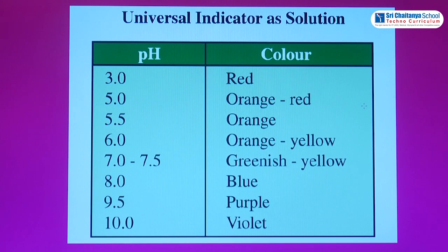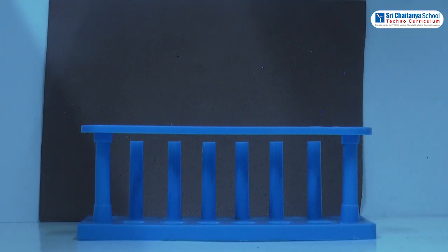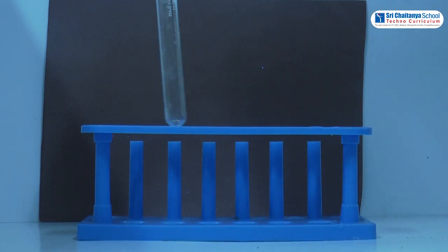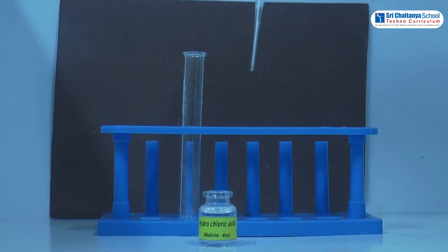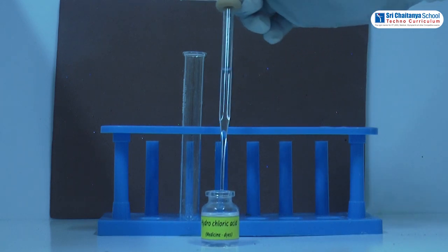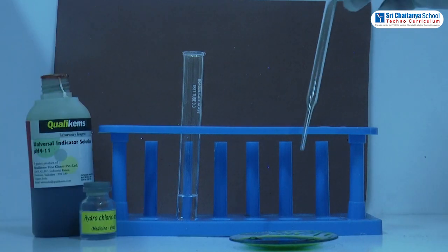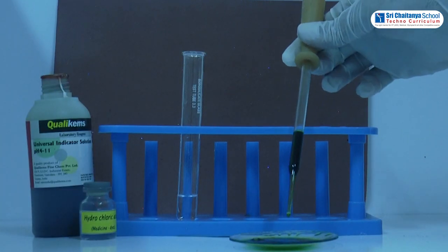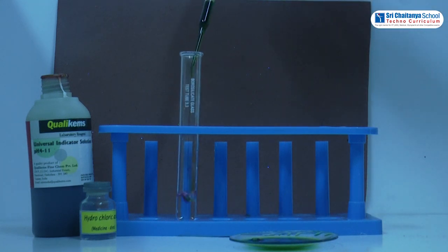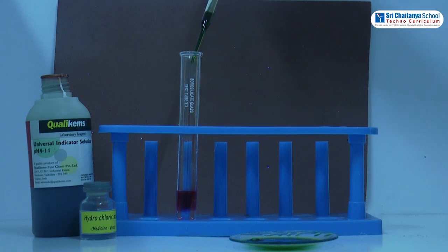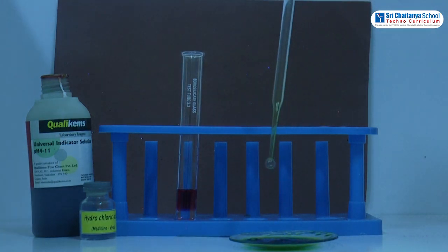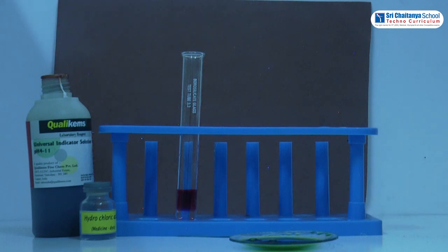Violet color indicates a pH value of 10.0. Now we'll go for the procedure. Take a clean and dry test tube and add a few drops of dilute hydrochloric acid, then add a few drops of universal indicator. When dilute hydrochloric acid mixes with universal indicator, it turns red.